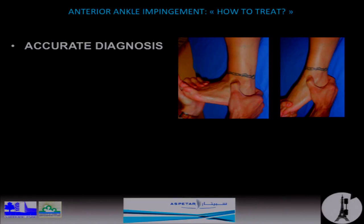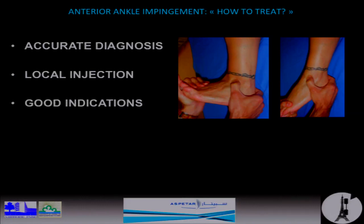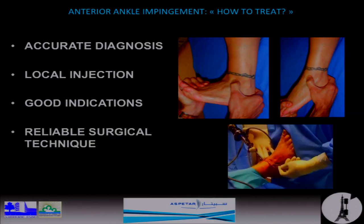First is the accuracy in the diagnosis. The second step, which is also the first step of the treatment, is the local injection. It is very important for anterior impingement. The main problem is a good indication for treatment and arthroscopic treatment. The gold standard is the arthroscopic treatment with a reliable surgical technique to reach good results and fast recovery, and after, the post-op care.